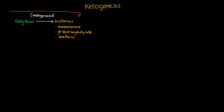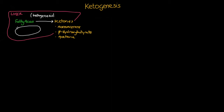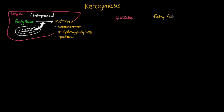Ketogenesis takes place in the liver and more specifically within the mitochondria. Under aerobic conditions, glucose and fatty acids can be metabolized to give acetyl-CoA, which is then further metabolized within the citric acid cycle within the matrix of mitochondria.